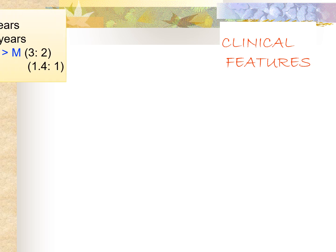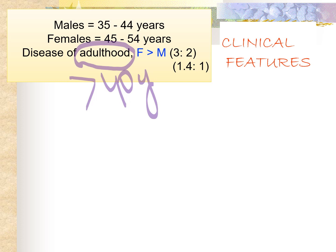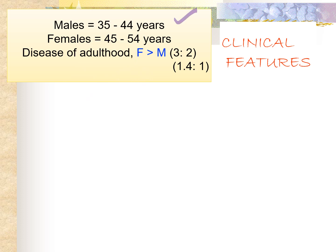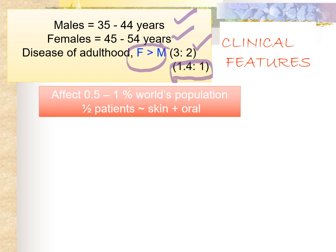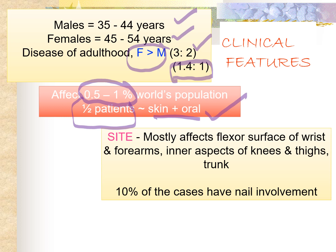Coming to clinical features: lichen planus is a disease of adulthood, most commonly occurring in those more than 40 years of age, specifically 35 to 40 years in males and 45 to 54 years in females. Females are more commonly affected, with a ratio of 1.4:1 as per Sheffield, or 3:2 per other texts. Worldwide prevalence is 0.5 to 1 percent of the world population. Of those, 50 percent of patients have both skin and oral lesions. Skin sites affected include flexor surfaces of the wrists, forearms, inner aspects of knees, thighs, and trunk. 10 percent of cases also show nail involvement.